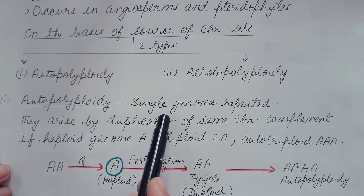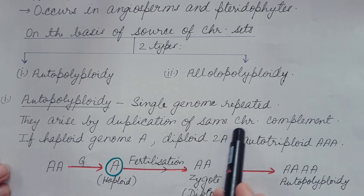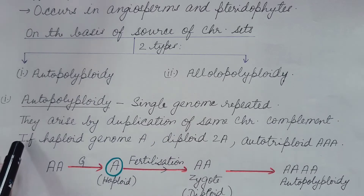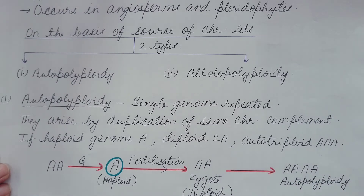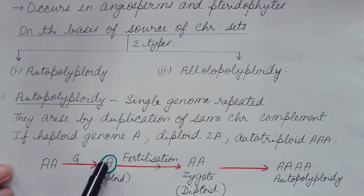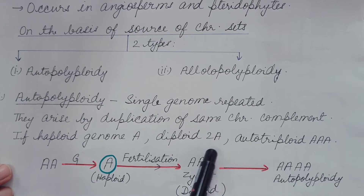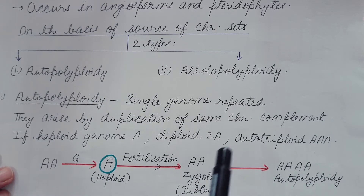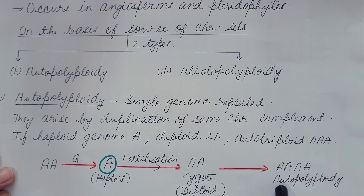In autopolyploidy, a single genome is repeated twice or more. The same chromosome complement is duplicated. For example, if the haploid genome is A, the diploid is 2A, autotriploid is 3A, autotetraploid is 4A, and so on. During gametogenesis, haploid gametes are produced; male and female gametes fuse to produce a diploid zygote. Then duplication occurs naturally or by colchicine application, resulting in autopolyploidy.